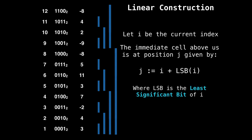So if the current position is position i, then the immediate cell above us, which is responsible for us, so our parent, let's say that is j. And j is given by i plus the least significant bit of i.